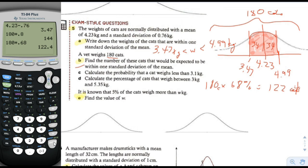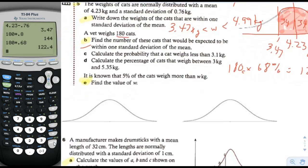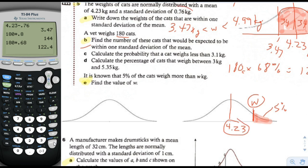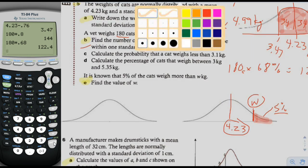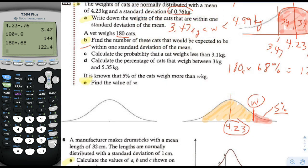It is known that 5% of the cats weigh more than W kilograms. Find the value of W. We draw a picture with the middle at 4.23, and 5% is a very small piece on the right. We know that region is 5%, but we don't know what the dividing line W is. Inverse normal gives us that if we tell it 4.23 and standard deviation 0.76. But it doesn't like the right region — it wants the left region.